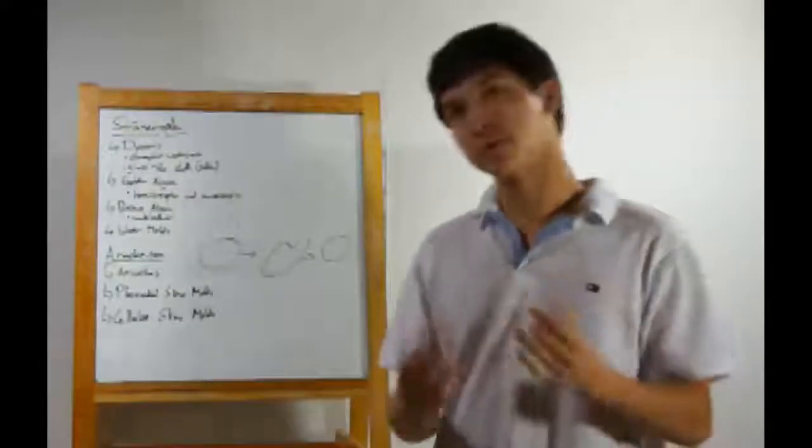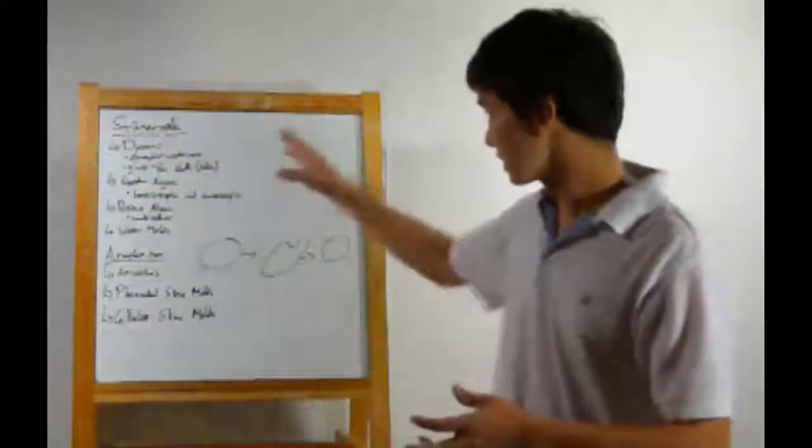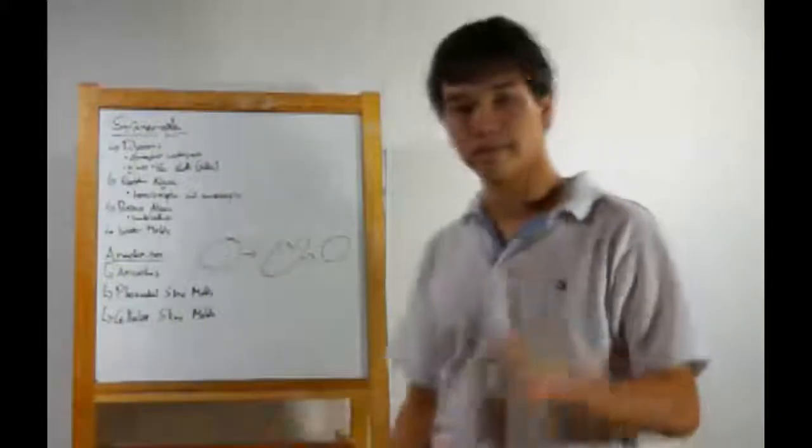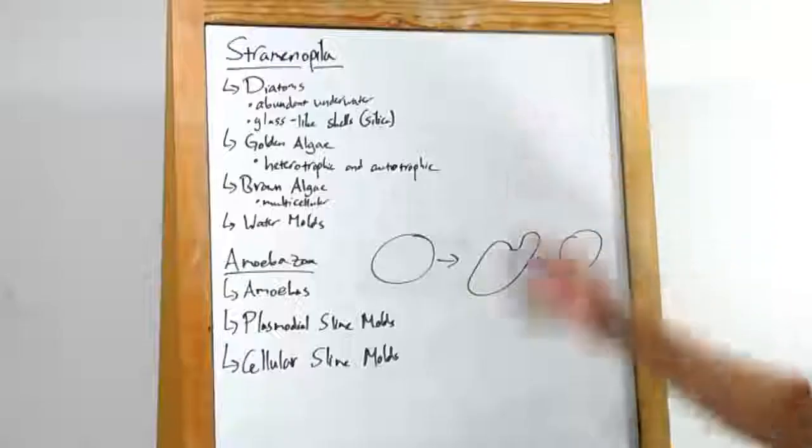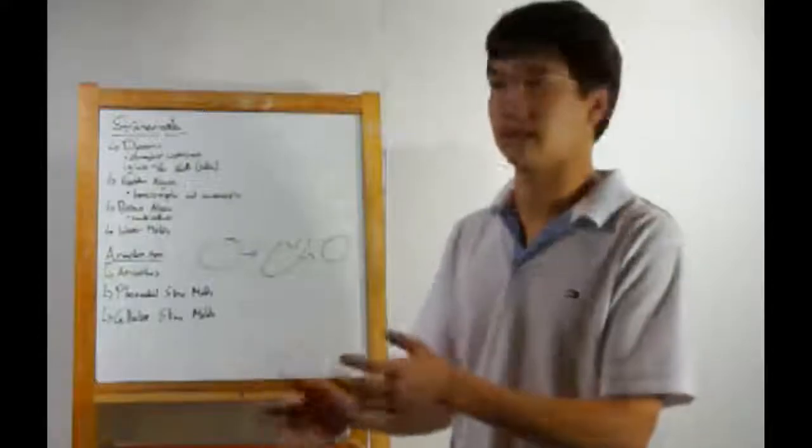Here is the second part of the protist lesson, and we're going to discuss just two groups today, stramenopila and amoebazoa. First up, stramenopila. These are more plant-like than other protists.